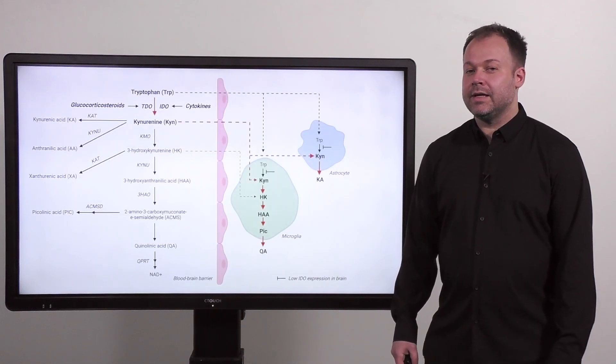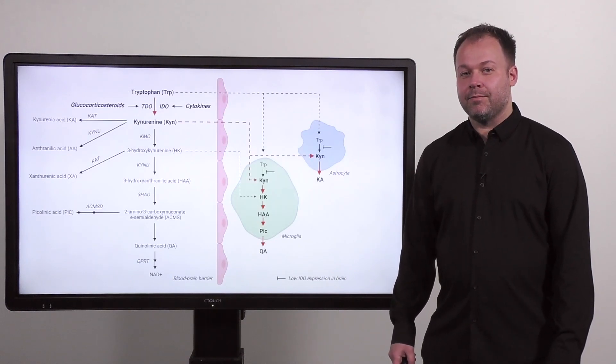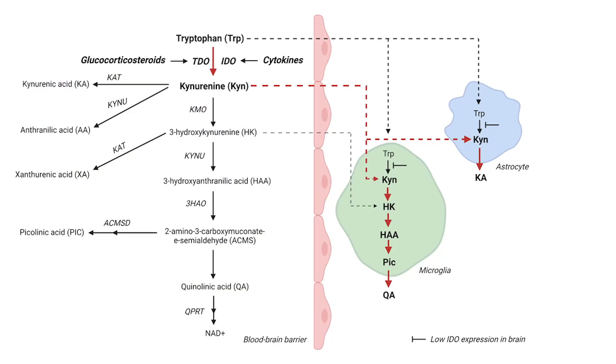Our take on this is that this could be mediated by the kynurenine pathway. Tryptophan is degraded to kynurenine by two rate-limiting enzymes that are both induced in an inflammatory state. And kynurenine can cross the blood-brain barrier and give rise to two neuroactive compounds.